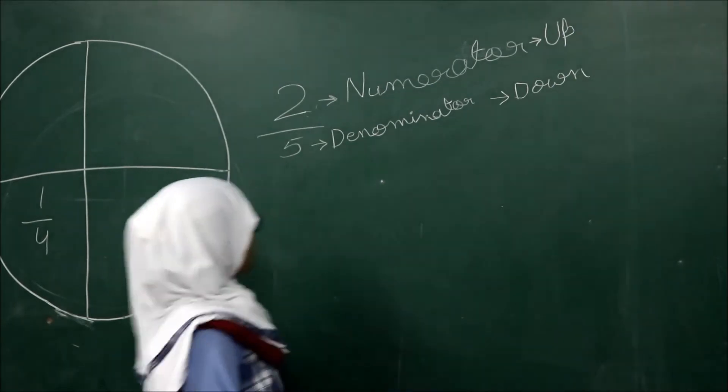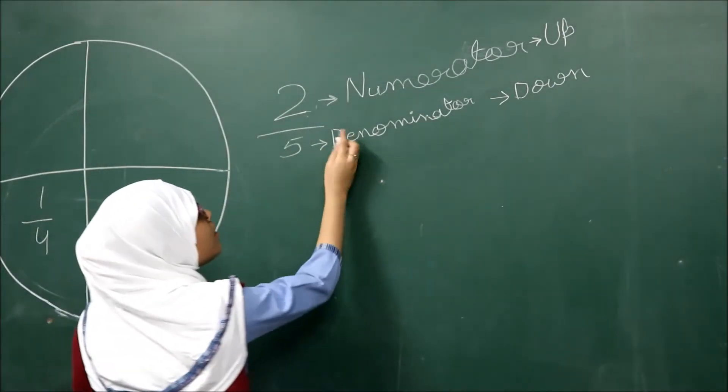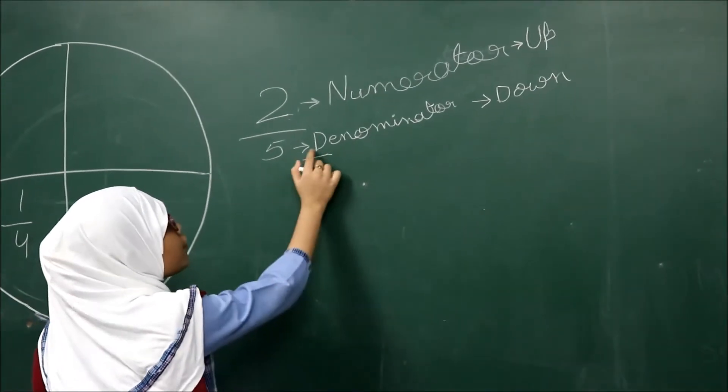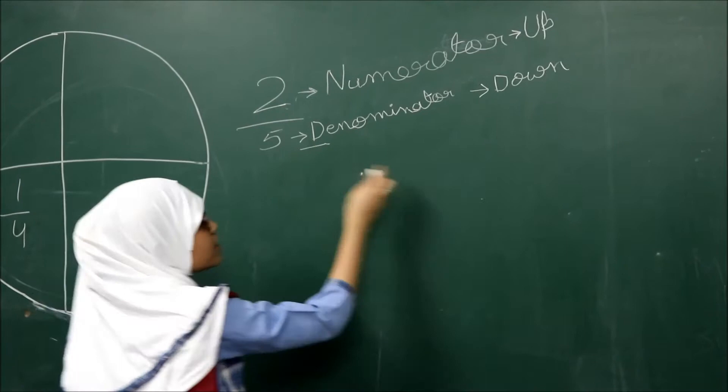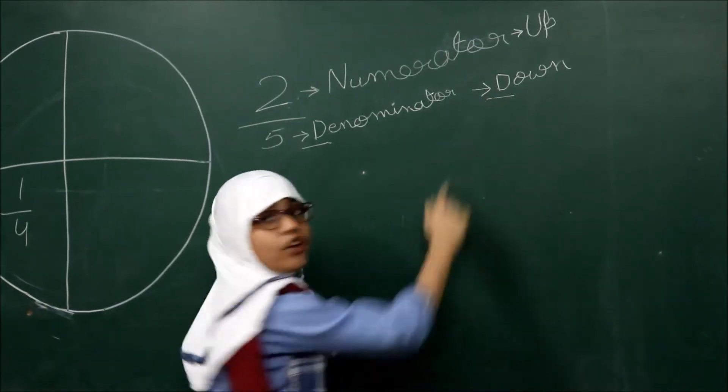Here, D for denominator and D for down — that's the trick to remember that the denominator is always at the bottom.